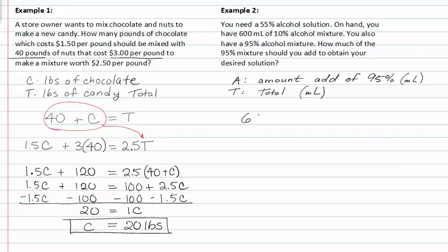If we know that there's 600 milliliters and we're adding A to it, this will give us the total. We also know that there's a percentage of alcohol in the 600 milliliters. It says that there are 600 milliliters at 10% solution. So we'll multiply the 600 times .1.